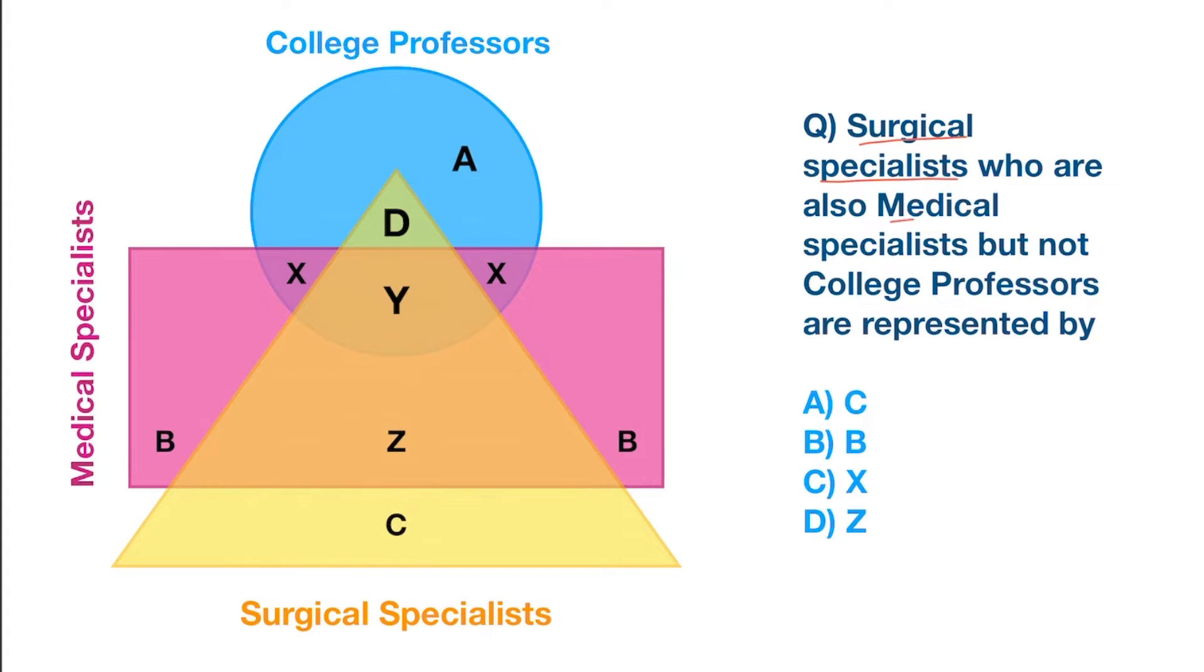Surgical specialists who are also medical specialists, but not college professors. So we need to take surgical plus medical excluding the college professors. And if you carefully observe, this is the region. Now we are excluding this because this is the college professors. So the alphabet is Z. Therefore option D.